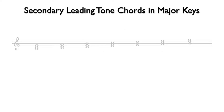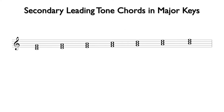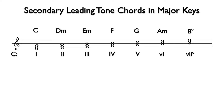Here we have the diatonic triads in the key of C major. The chords are named as follows, and they receive the following Roman numeral analysis. We will notate the leading tone triads that lead to each of these diatonic triads.